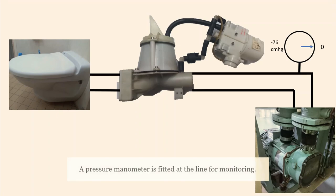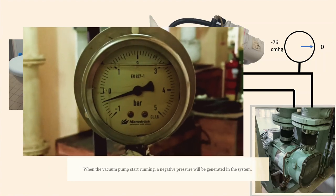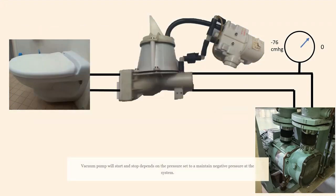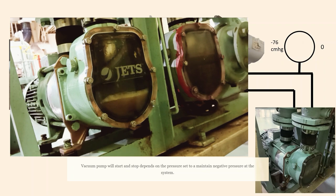A pressure manometer is fitted at the line for monitoring. When the vacuum pump starts running, a negative pressure will be generated in the system. The vacuum pump will start and stop depending on the pressure set to maintain negative pressure in the system.